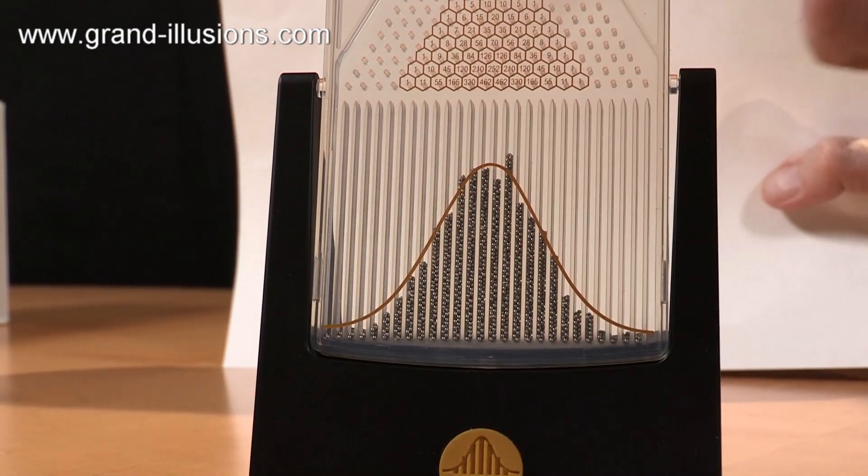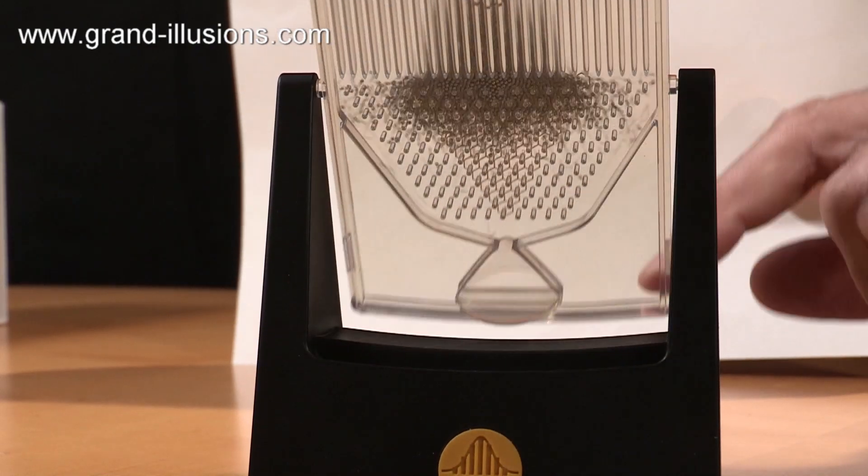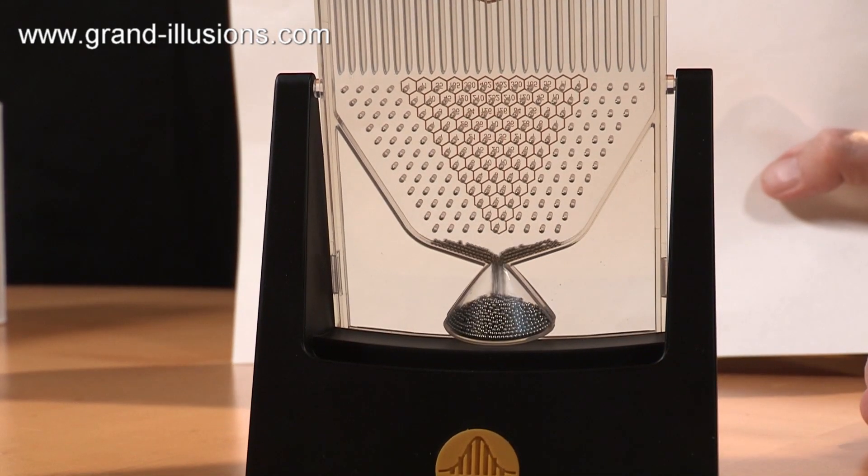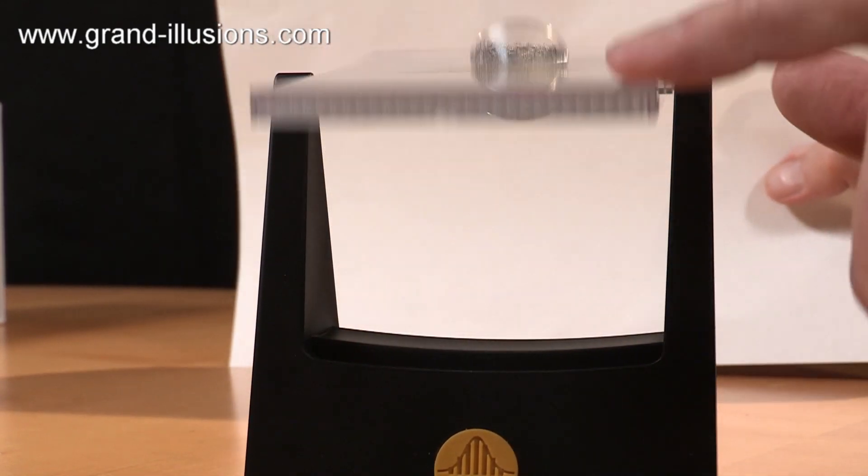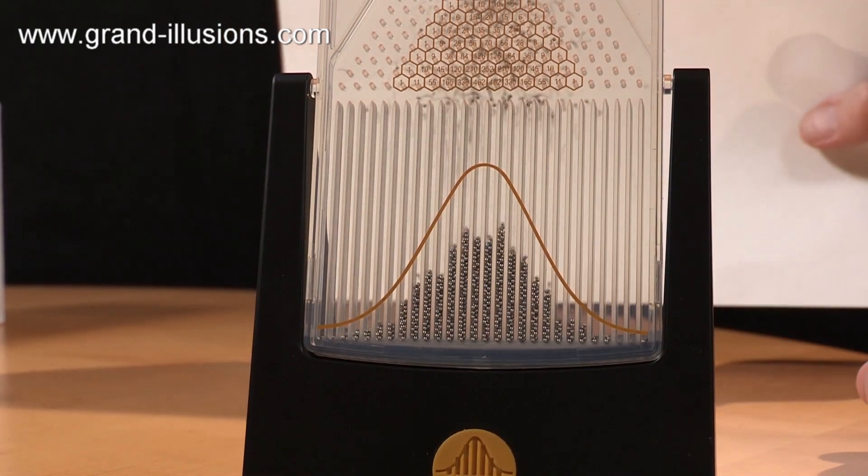Every time you do it, it just approaches what they call the normal curve, but it never quite gets there. That's more probability coming in. So a lovely demonstration of this bit of mass.